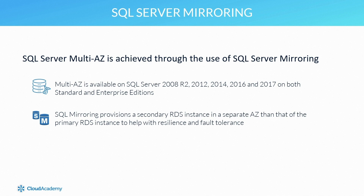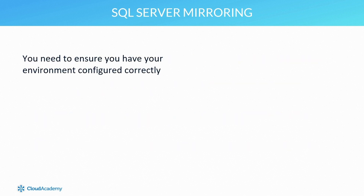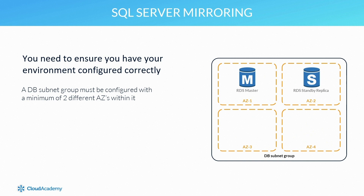Previously I mentioned that with the failover multi-AZ technique, AWS automatically updates the DNS record to point to the secondary instance. With SQL Server mirroring, both the primary and secondary instances use the same endpoint. During an incident, the mirroring process transitions the physical network address from the failed instance to the standby mirrored instance. Before enabling SQL mirroring, you need to ensure your environment is configured correctly — first, you need a database subnet group configured with a minimum of two different AZs.